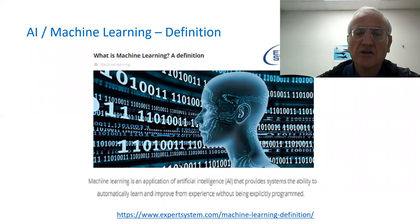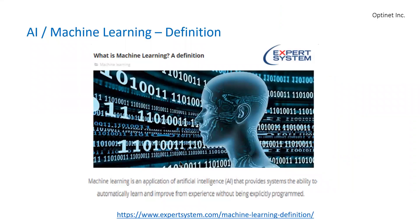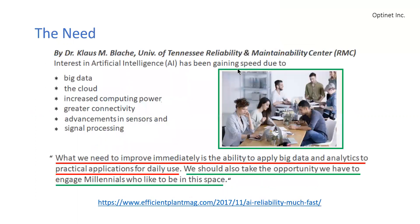The definition of machine learning, as shown by expert system, is that it is an application of artificial intelligence that provides systems the ability to automatically learn and improve from experience without being explicitly programmed.